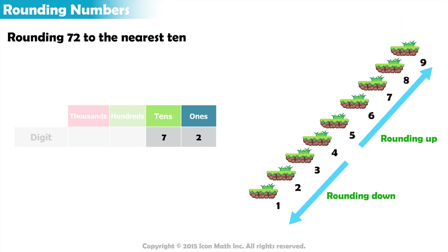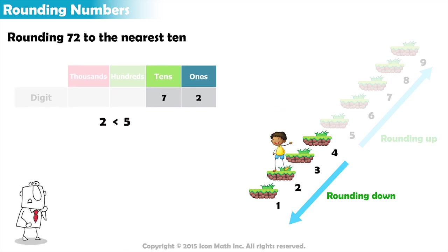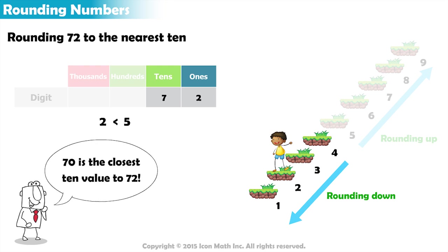We have a 7 in the tens place and a 2 in the ones place. 2 is less than 5, so we round down. Which 10 value is smaller than 72 but closest to it? That's right, 70. So we round to 70.